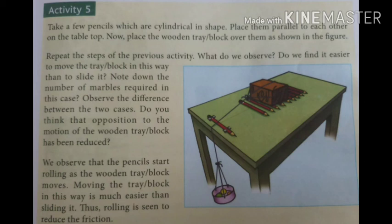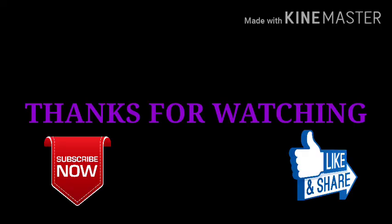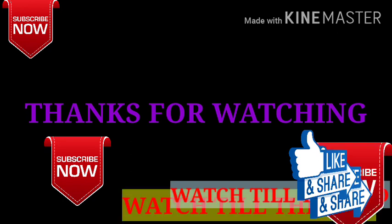This is why laborers prefer placing logs under heavy machines when moving them from place to place. Rolling friction is the force of friction that comes into play when one body rolls over the surface of another body, and it is always less than sliding friction. So we have a fill-in-the-blank task: arrange static, sliding, and rolling friction in order from greatest to least. Thanks for watching — please like and subscribe to the channel.